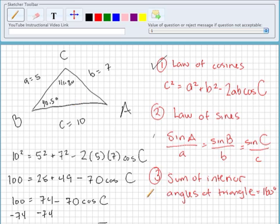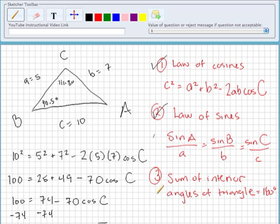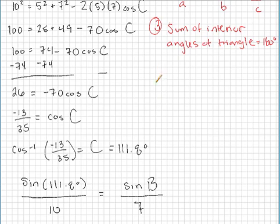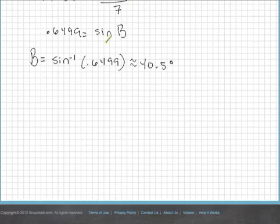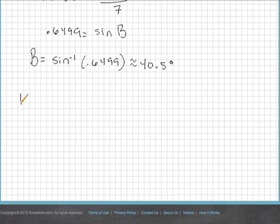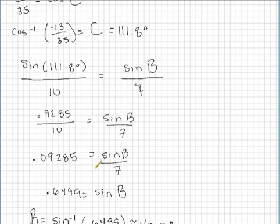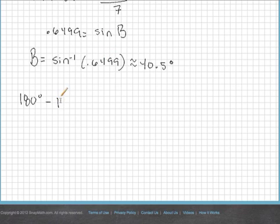Now the easiest part. Finding this last angle is basically just a process of elimination. So I know that the sum of the angles is 180. And I have two of my angles. So let's take 180 degrees minus angle C, which is 111.8, minus angle B,